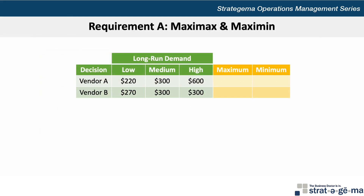This problem is simple enough that we don't need to use Excel and can set up a basic table to help us. For requirement A, let's determine the maximized maximum, or maxi-max, and maximized minimum, or maxi-min, payoffs for each vendor. Beginning with vendor A, we can see that the minimum payoff is $220 million if the long-run demand happens to be low, and the maximum payoff is $600 million if the long-run demand happens to be high.